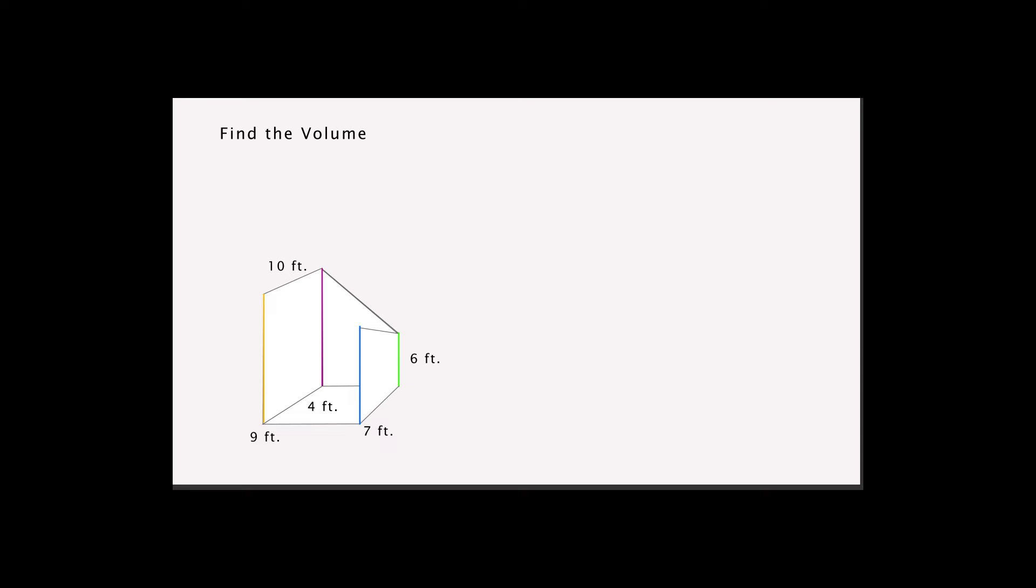Find the volume and the lateral area of a truncated right square prism whose base edge is 4 feet and whose lateral edges measure 6 feet, 7 feet, 9 feet, and 10 feet.